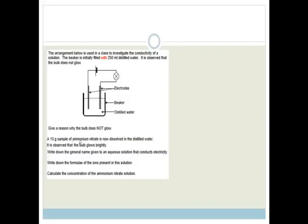Now it says a 15 gram sample of ammonium nitrate, so let's write that down, it's NH4NO3. NH4NO3 is now dissolved in the distilled water. It is observed that the bulb glows brightly. And why is that? That's because ammonium nitrate actually forms ions. It forms NH4 plus ions and NO3 minus ions. Therefore it's going to form nice, beautiful ions, so therefore it's going to allow for the electricity to be conducted. And like I said before, what is the general name? It is an electrolyte.